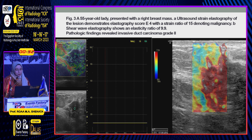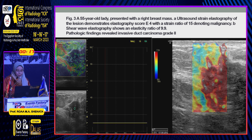This patient, 55 years old, presented with right breast mass. The lesion had elasticity score 4, mass strain ratio 15, and shear wave elasticity ratio 9.9, and pathology revealed invasive ductal carcinoma.